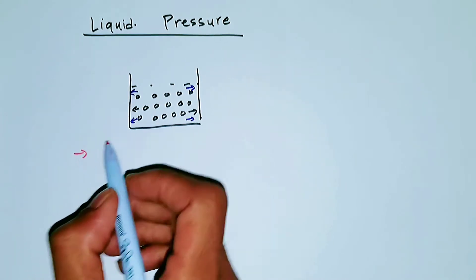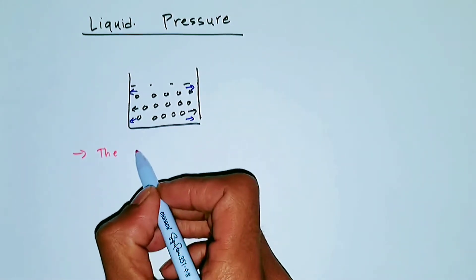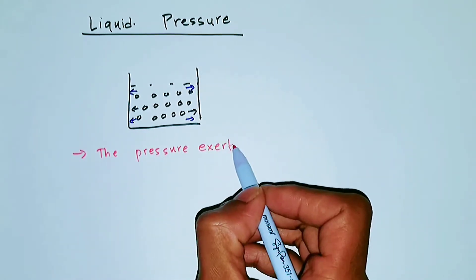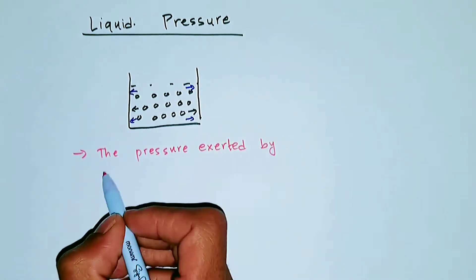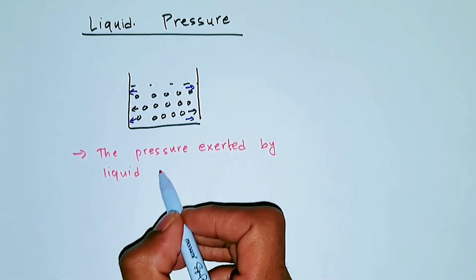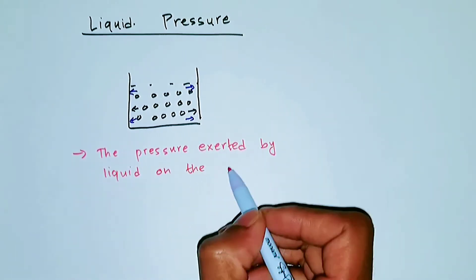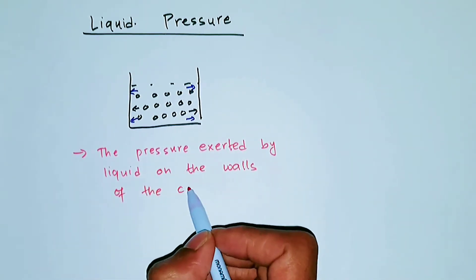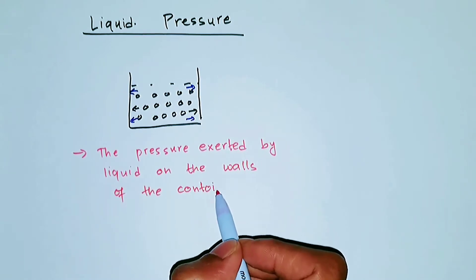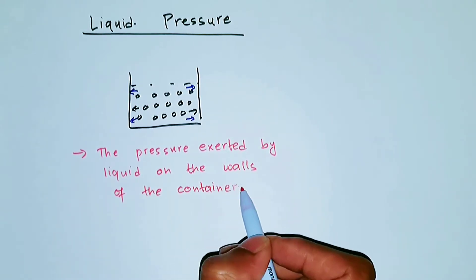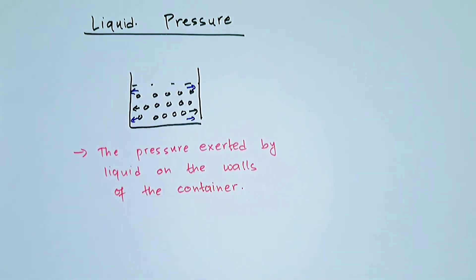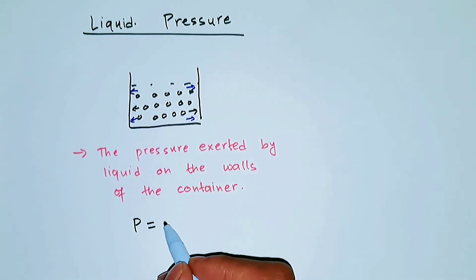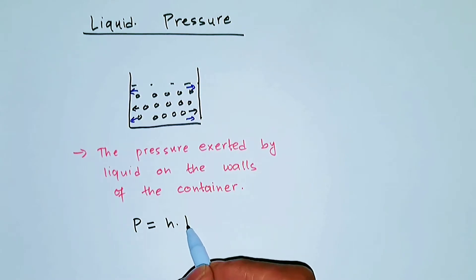So you can define liquid pressure as the pressure exerted by liquid. That's the definition of liquid pressure. Now we have the formula of liquid pressure, which is P equals H times D times G.